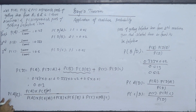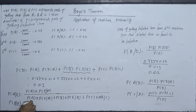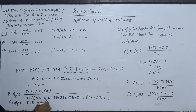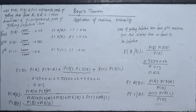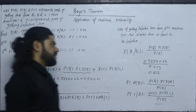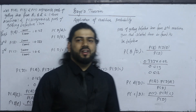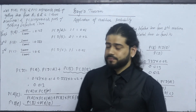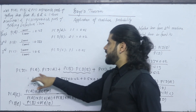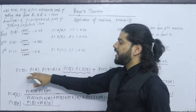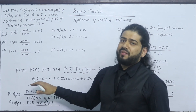Then P(B|E) = P(B)·P(E|B) divided by the same total. This gives us the conditional probability that a defective item came from a specific machine.